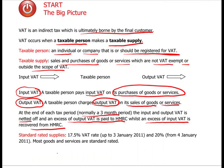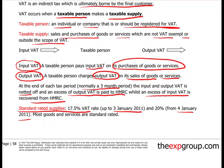In the UK, the VAT standard rate was 17.5% up to 3rd January 2011. It is now running at 20% and has been throughout last year. Most goods and services are standard rated.